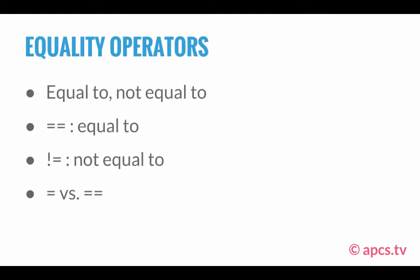We also have equality operators. As you can tell by the name, this is all about the equal sign. There are only two equality operators: equal to and not equal to. Equal to is represented by equals equals, and not equal to is represented by exclamation mark equals. Whenever you see an exclamation mark in Java, it represents 'not', and the exclamation mark always represents not.